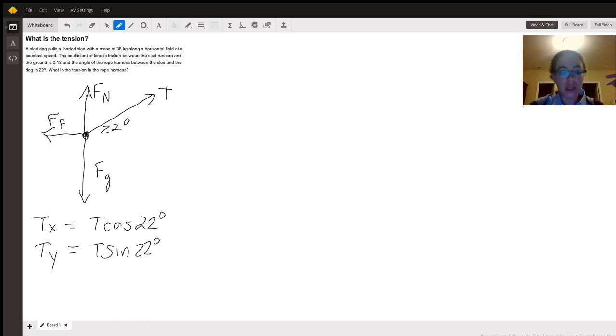Let's first look at the horizontal axis. What forces do we have acting? We only have T_x and the force of friction. That tells us that T cosine 22° minus the force of friction equals zero, because we can't have any net force along the x direction.